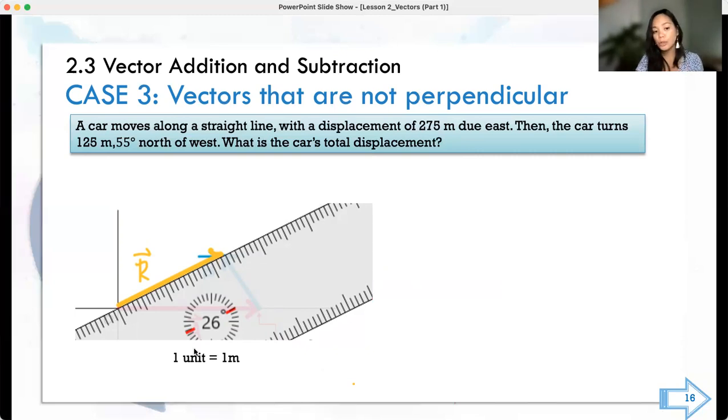And then you use a protractor to get the angle. So if you use your ruler, you will encounter this in your laboratory. If you have a ruler and you have a protractor, you will have the answer.